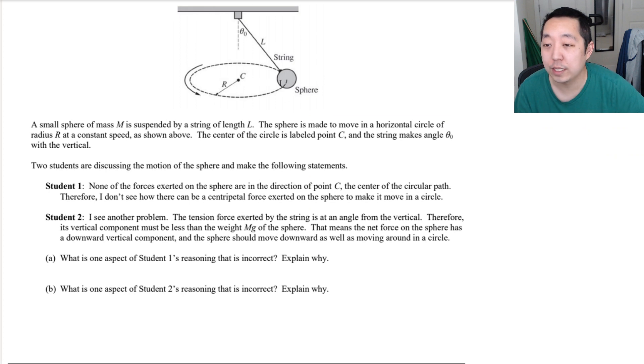So we have a small sphere of mass M is suspended by a string of length L. The sphere is made to move in a horizontal circle of radius R at constant speed as shown above. The center of the circle is labeled C and the string makes an angle theta naught with the vertical. Two students are discussing the motion of the sphere and make the following statements. Student 1, none of the forces exerted on the sphere are in the direction of point C, the center of the circular path. Therefore, I don't see how there can be a centripetal force exerted on the sphere to make it move in a circle.